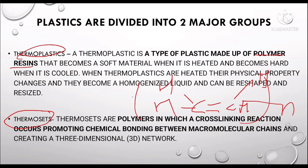Thermosets are polymers in which a cross-linking reaction occurs, promoting chemical bonding between macromolecular chains and creating a three-dimensional network. Their physical properties do not change once heated — they cannot be reformed. You may have studied these topics in Class 12 in the polymers chapter of chemistry.